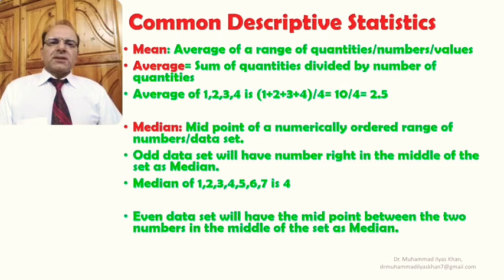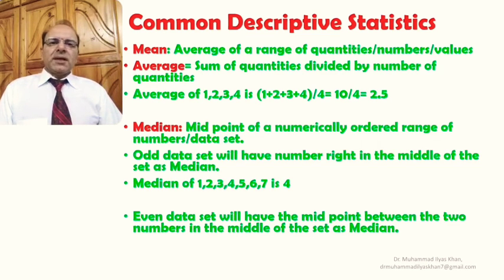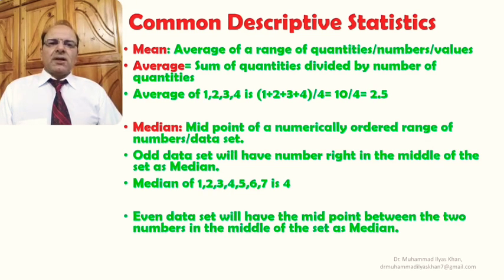Median is another descriptive statistical concept, which refers to the midpoint of a numerically ordered range of numbers or data set. Every data set will have a number right in the middle of the set as its median. For example, the data set 1, 2, 3, 4, 5, 6, 7 has an odd number of values, and 4 lies in the middle, so 4 is the median.